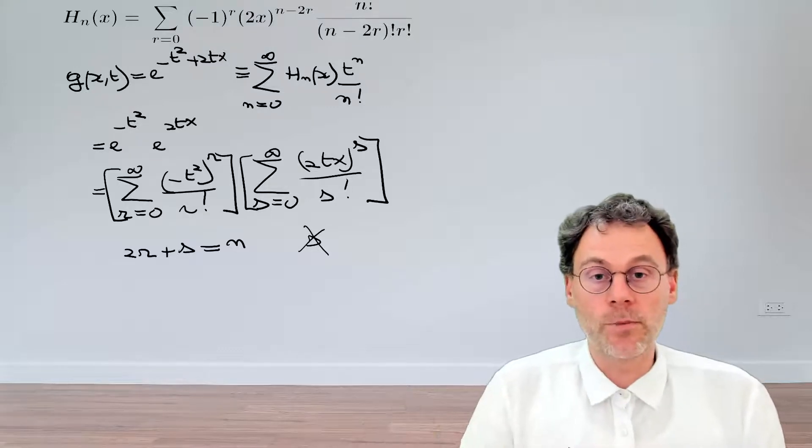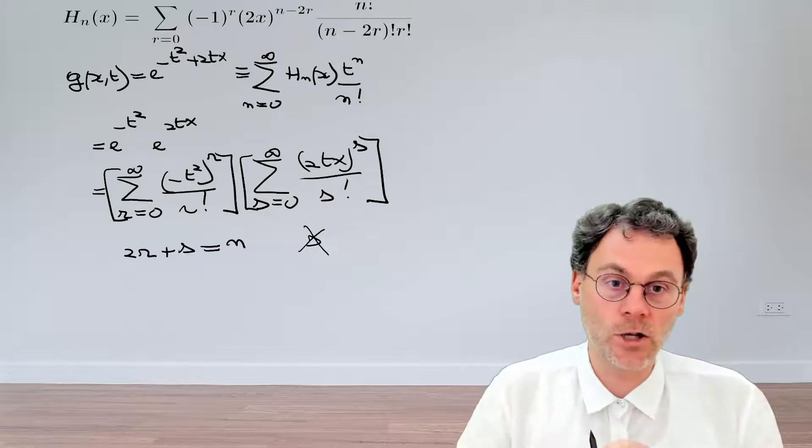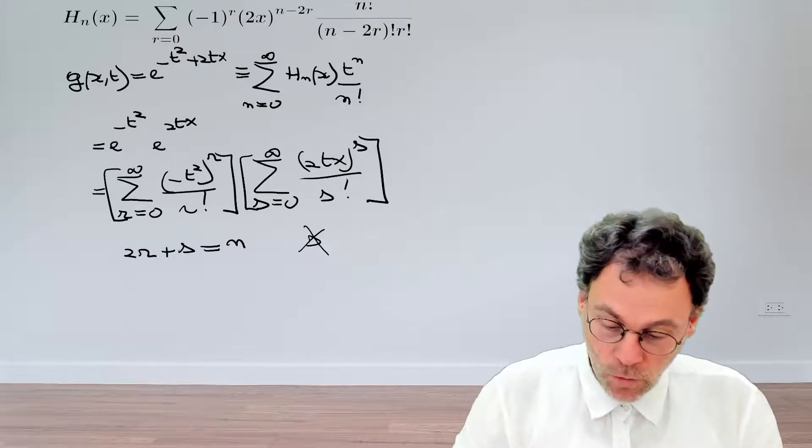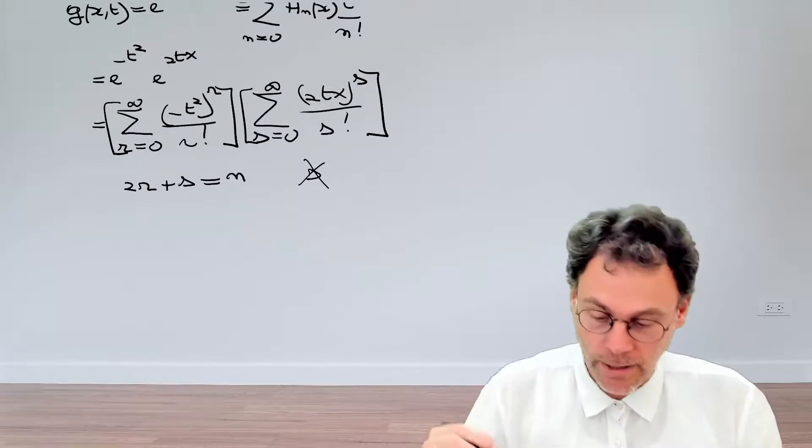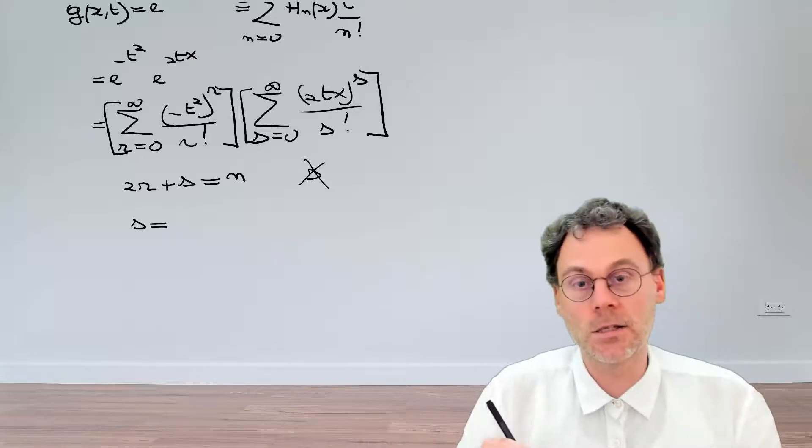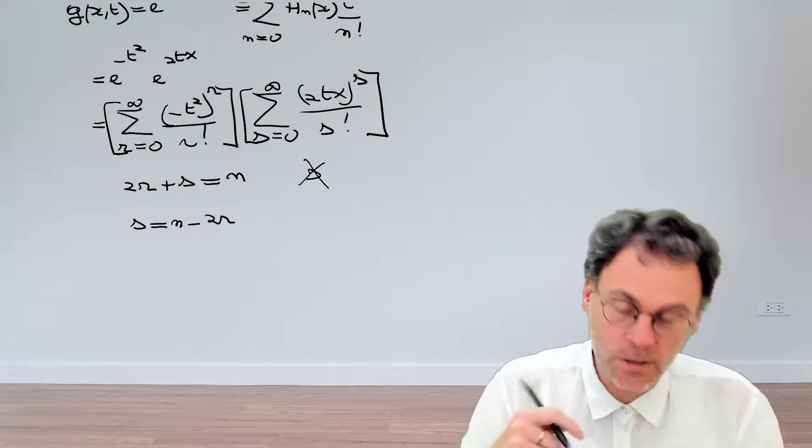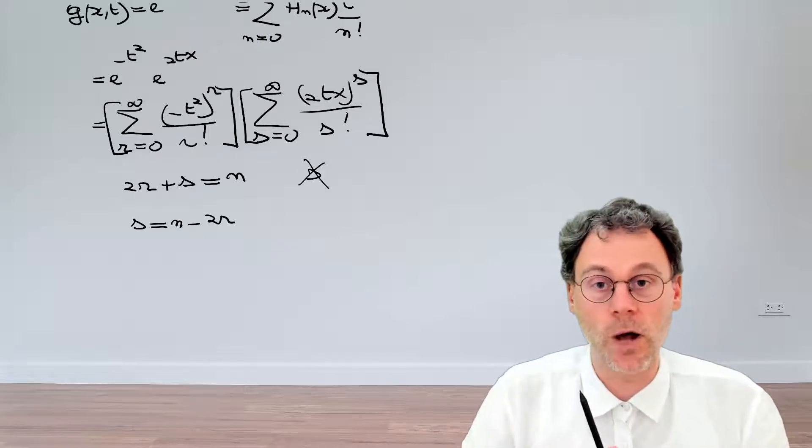The most tricky part here is trying to come up with the correct bounds for our summation indices. So one way we can do that is by taking a look at the variable that we've eliminated, which is s in our case, and write that as a function of the other summation indices. So we get s is equal to n minus 2r.